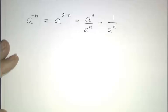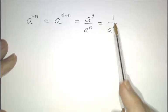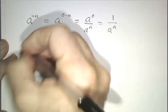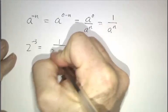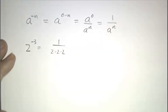So whenever you see a negative power, it's the same thing as dividing by a positive power. When I say 2 to the negative 3, that's 1 over 2 times 2 times 2.